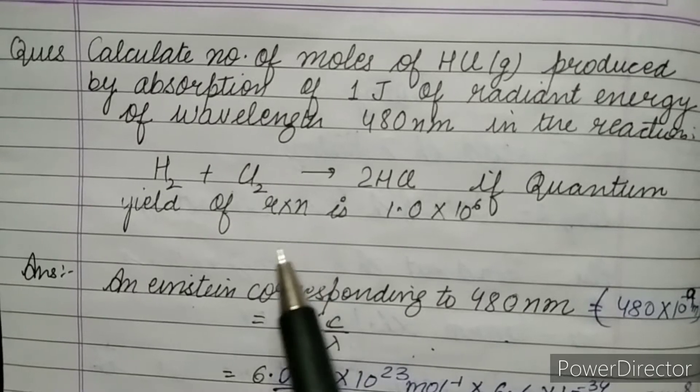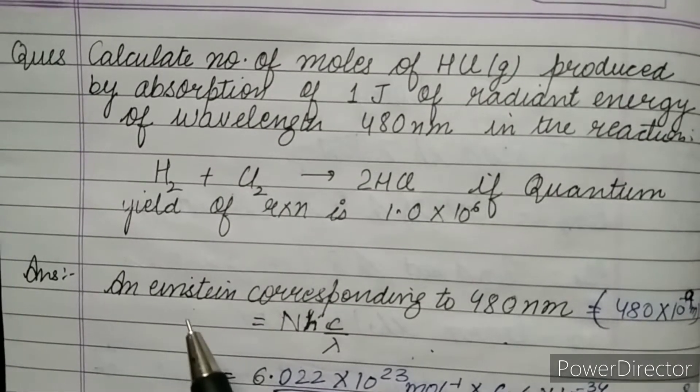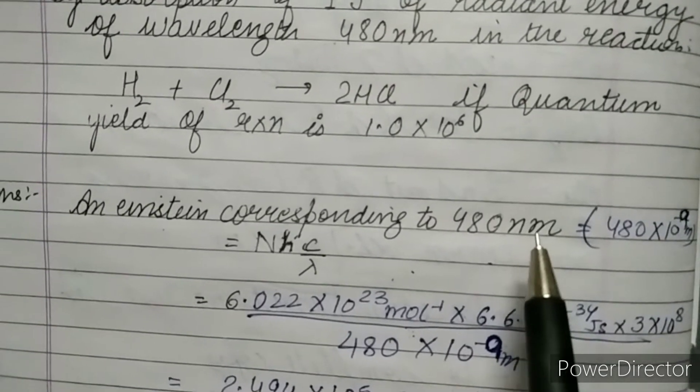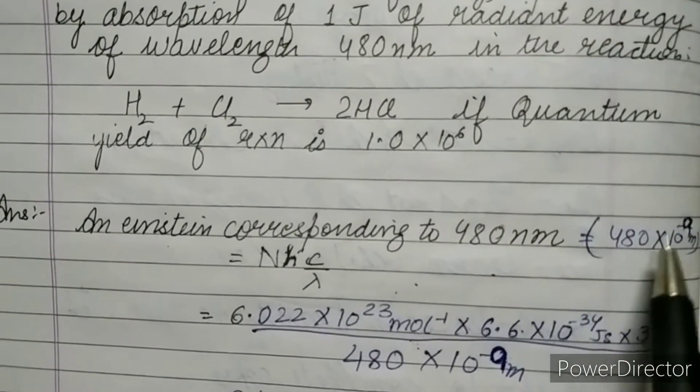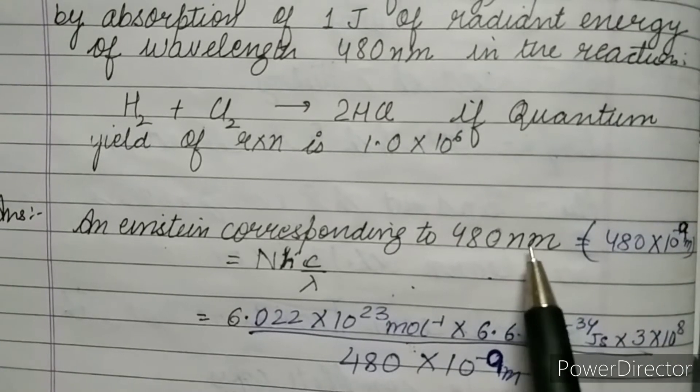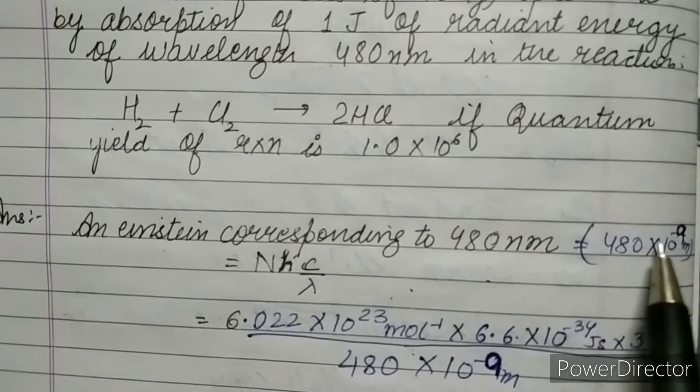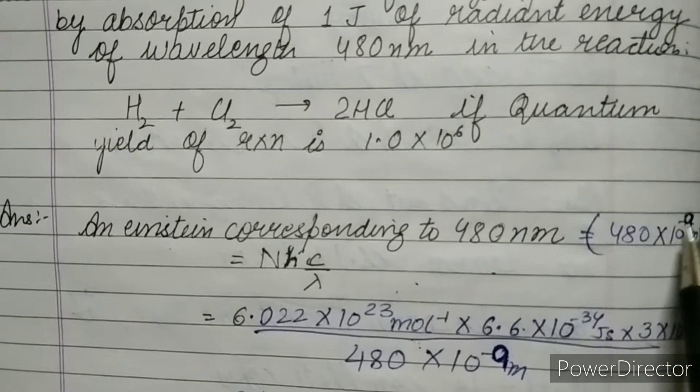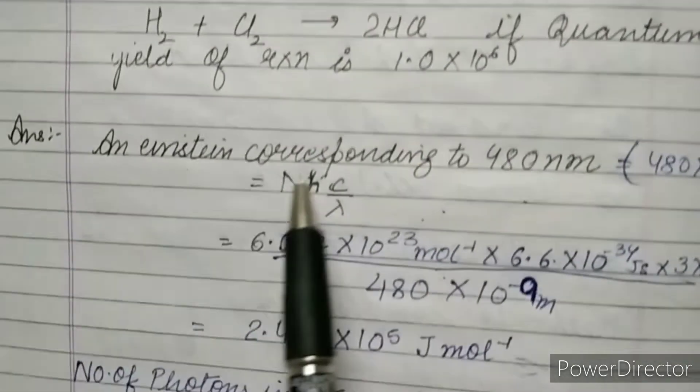We know very well 1 nanometer is 10 raised to power -9 meter, so we are converting this unit into meter. That's why we are multiplying it with 10 raised to power -9. Now using the formula NHC by lambda.